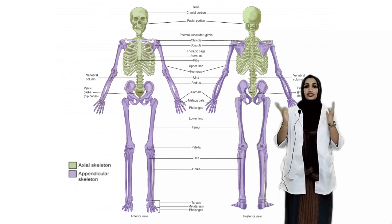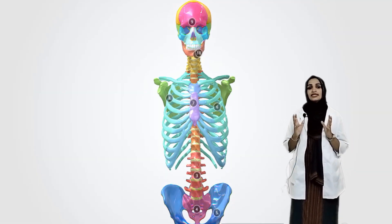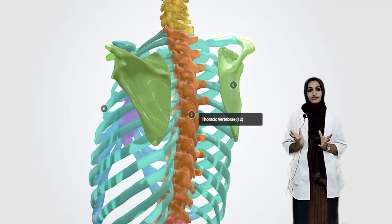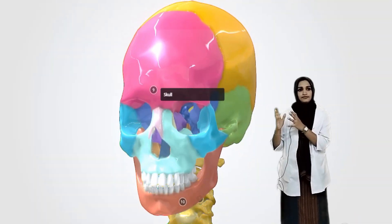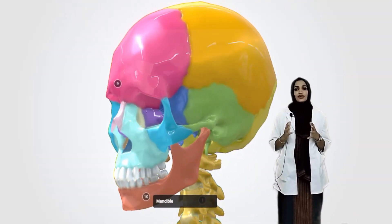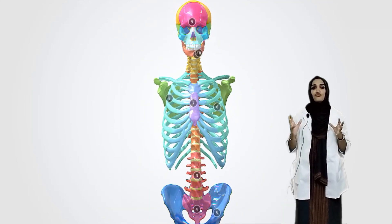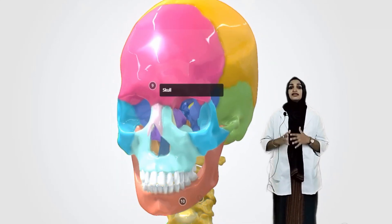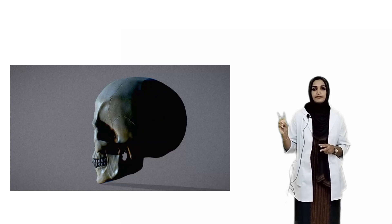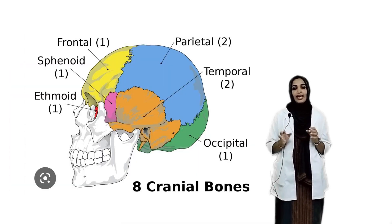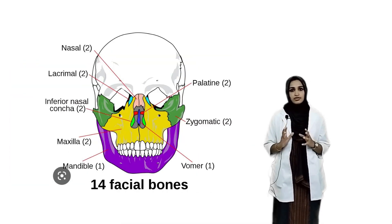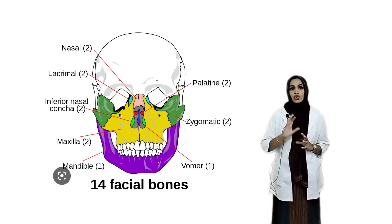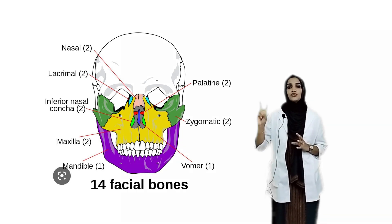Let's discuss about the axial skeleton. The axial skeleton includes the skull, vertebral column and thoracic cage. The skull is the framework which supports the organs of vision, hearing, smell and taste. The skull is mainly divided into two parts: the first one is the cranial bones and another one is the facial bones. There are eight cranial bones and 14 facial bones, and the total skull consists of 22 bones.